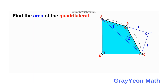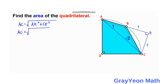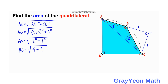Next, we find the length of AC. By the Pythagorean theorem, AC = √(AE² + CE²). AE equals 1 + 1 = 2, and CE = 1, so AC = √(2² + 1²) = √(4 + 1) = √5 units.